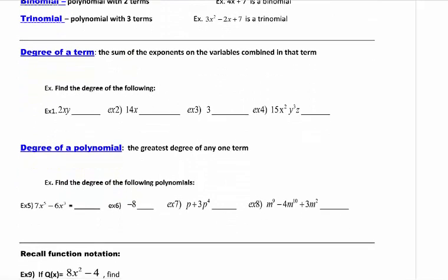So degree of a term, please notice that word there. Degree of a term, we take the sum of the exponents on the variables combined in that term. If there is no exponent, remember there's a one there. So we're looking at the exponents of the variables. So this would be a degree of two. Degrees are numbers. We add the exponents. Example two, there's only one variable and there is an exponent of one, so the degree of that term should be one.